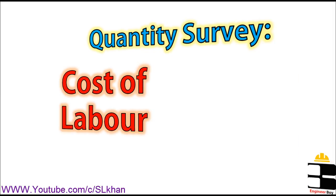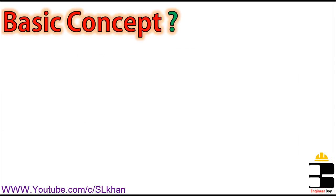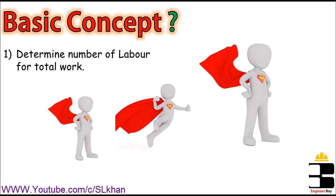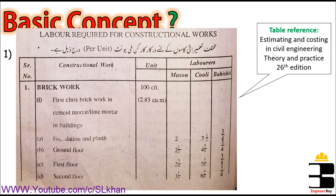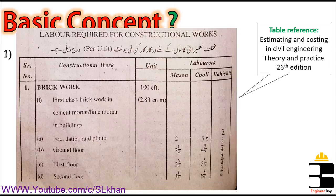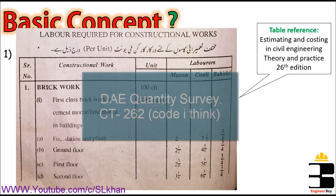In order to calculate the cost of labor per specific construction work, the first thing we need is to determine the number of labor per total work. We can do this from the given table. I have taken this screenshot from a nice book, Estimating and Costing in Civil Engineering. I think that's written by Bindatta. This table can also be found in the DAE books.